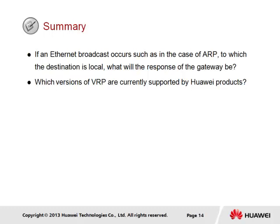Which versions of VRP are currently supported by Huawei products? Many Huawei products currently support VRP version 5, including the ARG3 series routers and the SX7 series switches. High-end products, such as Huawei's Cloud Engine series switches used in data center networks, rely on VRP version 8.